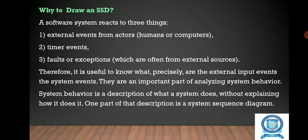Now, why draw an SSD? A software system reacts to three things: external events from actors, which are humans or computers; timer events; and faults or exceptions, which are often from external sources. Therefore, it is useful to know precisely what the external input events and system events are — they are an important part of analyzing system behavior. The system behavior is a description of what a system does without explaining how it does it, and one part of that description is a system sequence diagram.